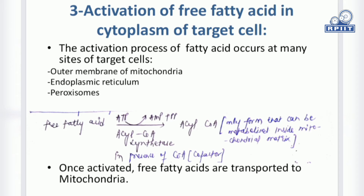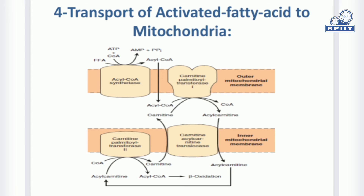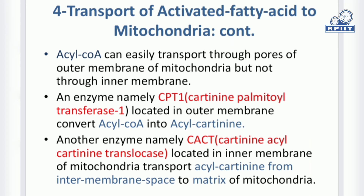Once activated, free fatty acids are transported to mitochondria. The fourth step involves the transport of activated fatty acids to mitochondria. Acyl coenzyme A can easily transport through the pores of the outer membrane of mitochondria but not through the inner membrane. An enzyme present in the outer membrane, CPT1 — carnitine palmitoyl transferase 1 — converts acyl coenzyme A to acyl carnitine, which can easily transport through the inner membrane of mitochondria.